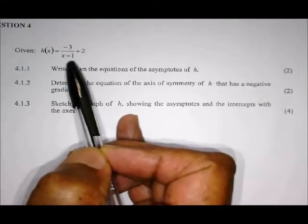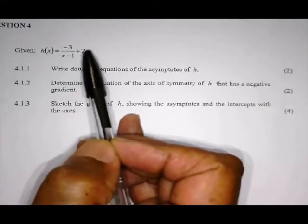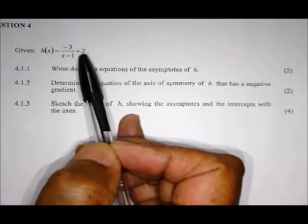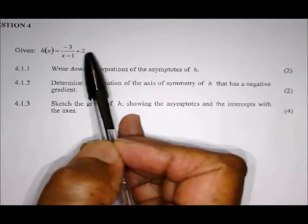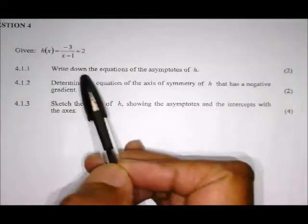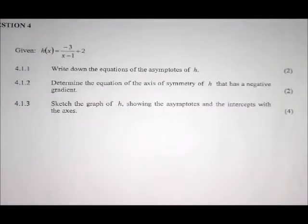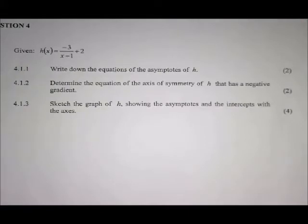So it's very important that you have to write down the equation of the asymptotes of h. The asymptotes are axes where the graph does not intersect. The asymptotes are x = 1 and y = 2.